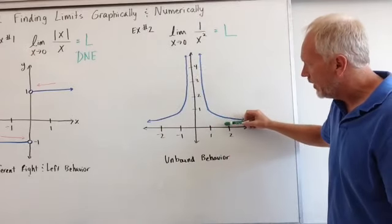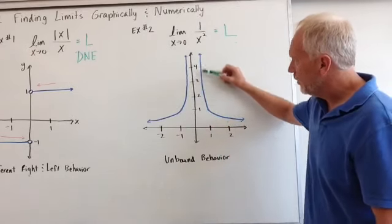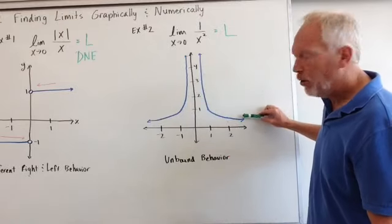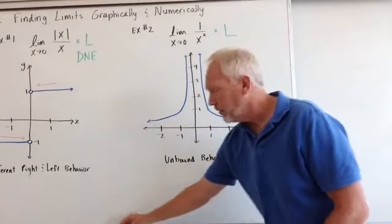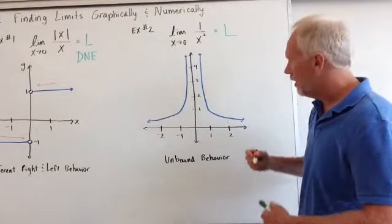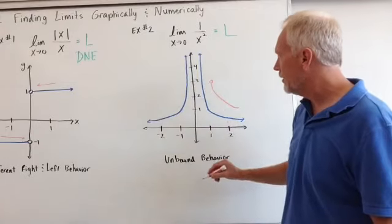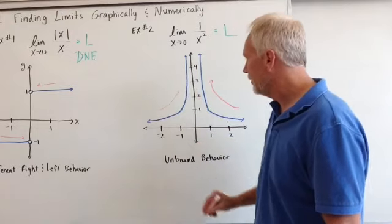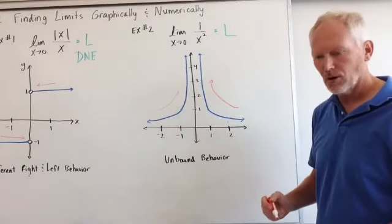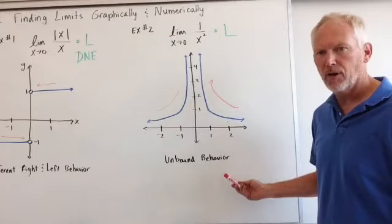Same thing here. When we have positive numbers, then we get this way. And so what happens is both of the values of Y keep increasing from the right or from the left, and they don't ever match. So in that case, we have unbound behavior.